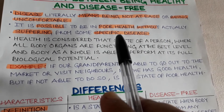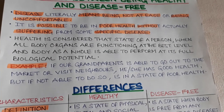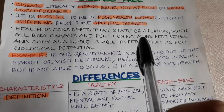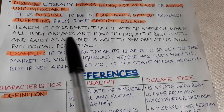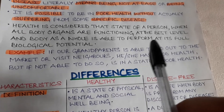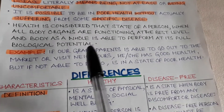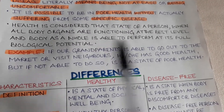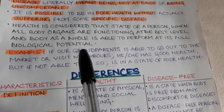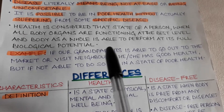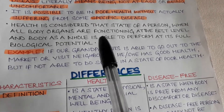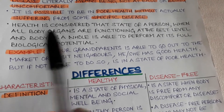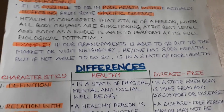Health is considered that state of a person when all the body organs are functioning at the best level — when all body organs are properly functioning and the body as a whole is able to perform at its full biological potential. When the body is able to perform all biological and physical activities properly, that is a state of good health.